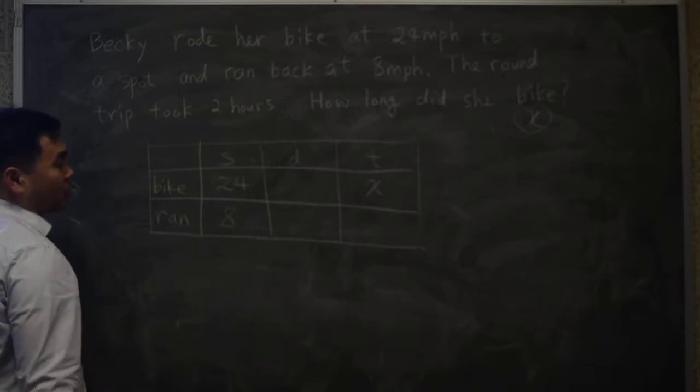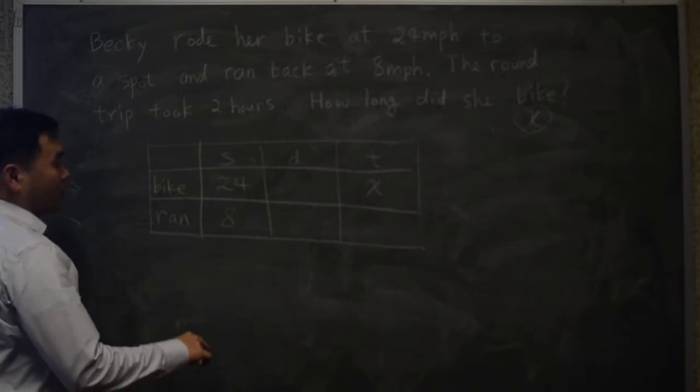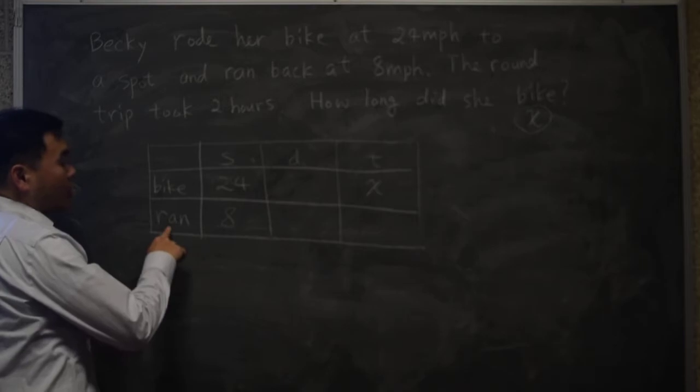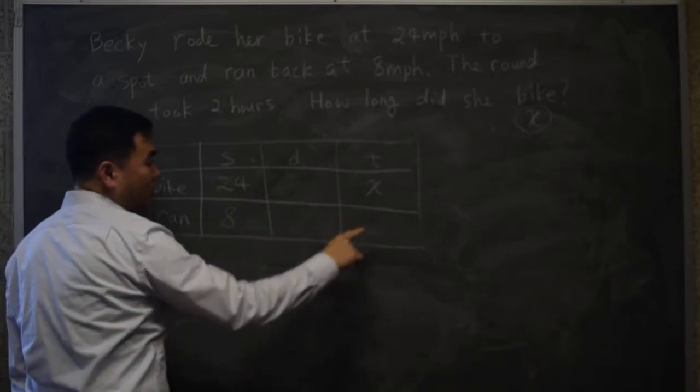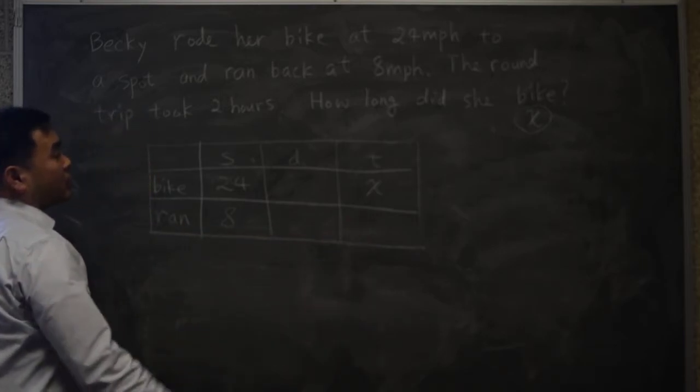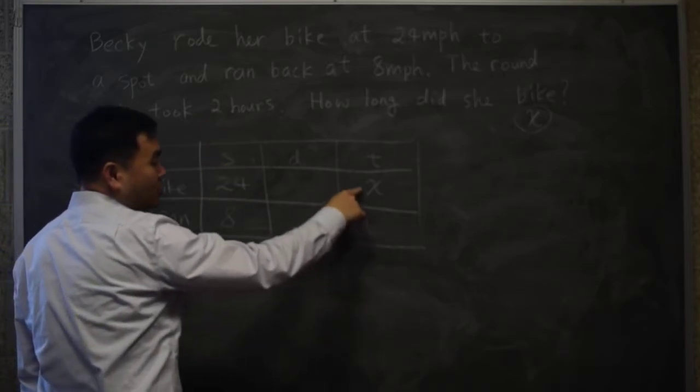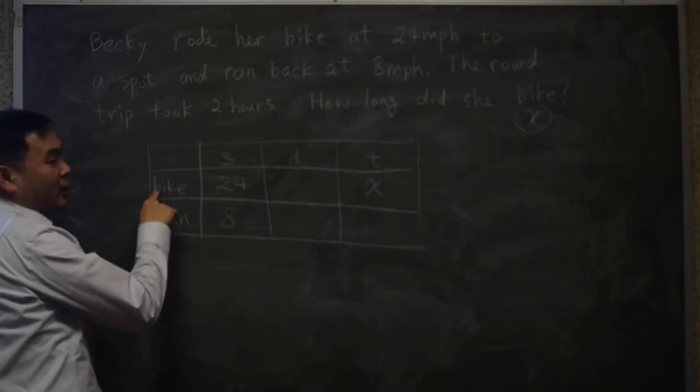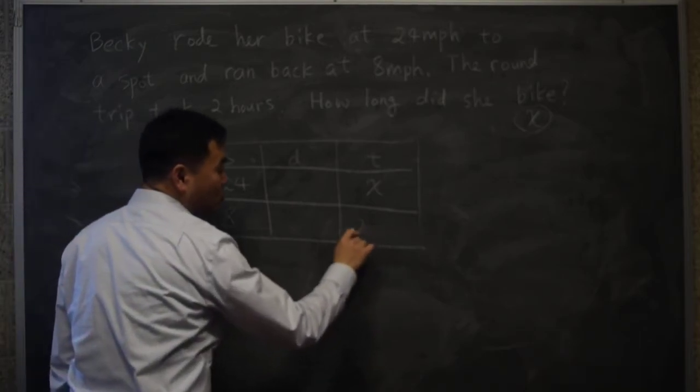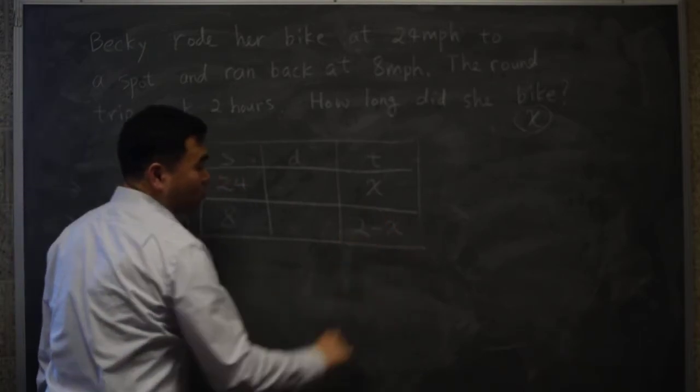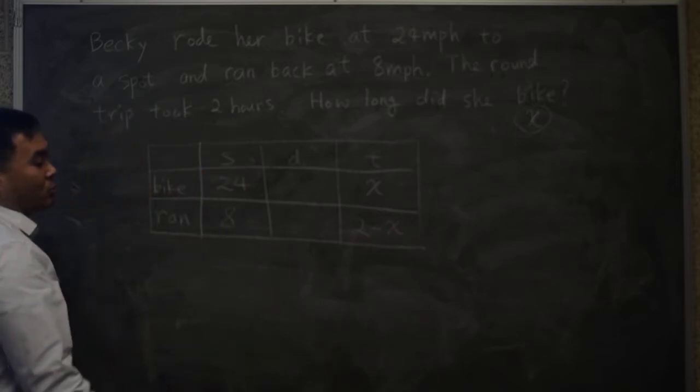Now let's try to fill in the remaining ones. We have this time that she ran, and because the entire trip took 2 hours, and it was for x amount of time that she took the bike, it must be 2 minus x that she ran.